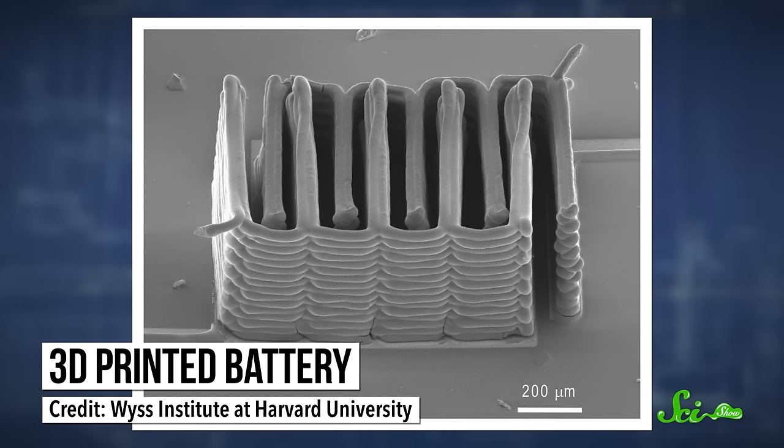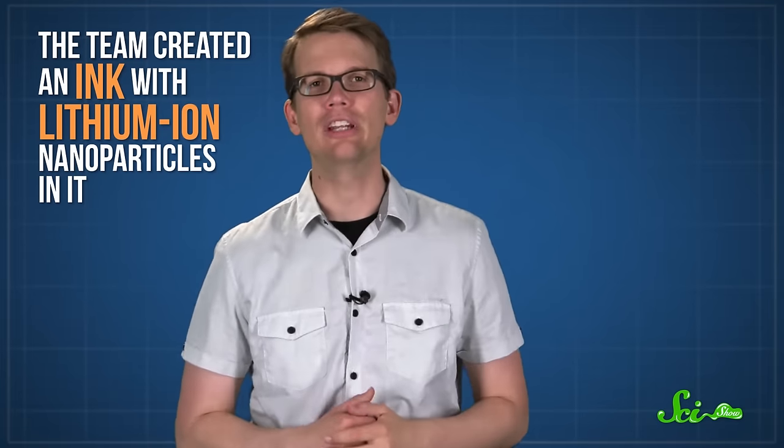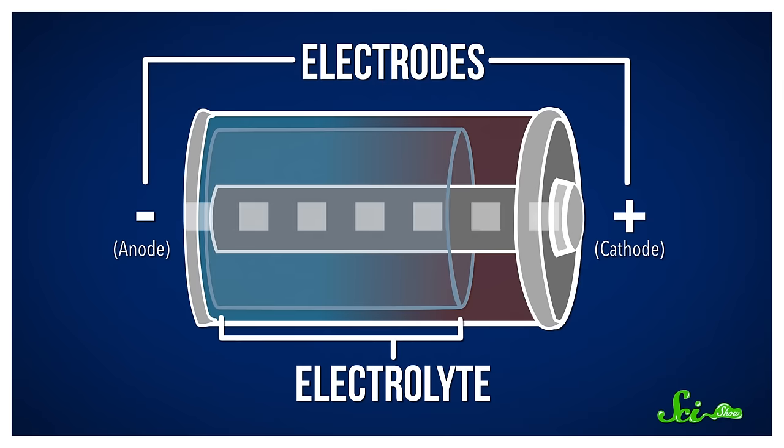In 2013, a team of American researchers managed to 3D print extra-efficient batteries the size of a grain of sand. To make their miniature batteries, the team created a special kind of ink with lithium-ion nanoparticles in it. If that sounds familiar to you, it's because lithium-ion batteries are in almost everything you use, from your smartphone to your hybrid car. And like all batteries, they work using electrodes and an electrolyte. A current passes between the electrodes by flowing through the electrolyte, providing electrical power.